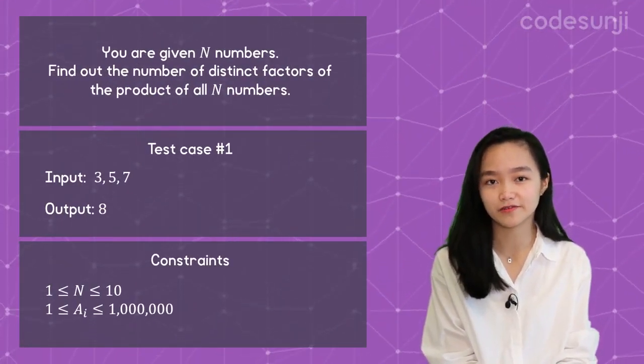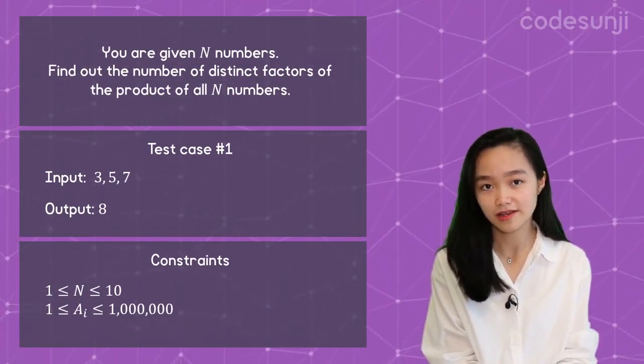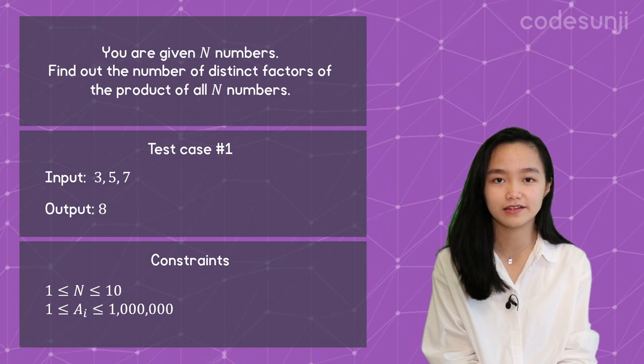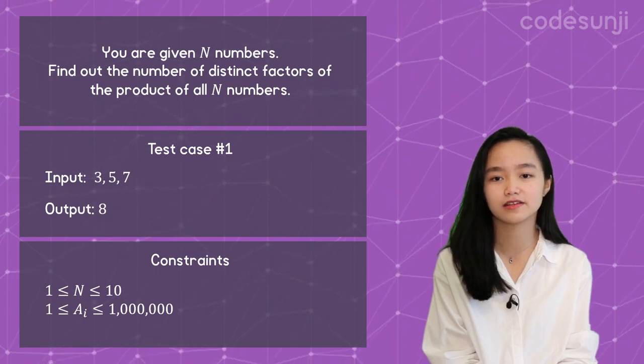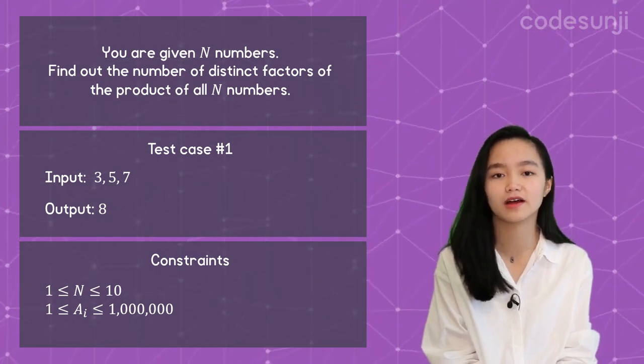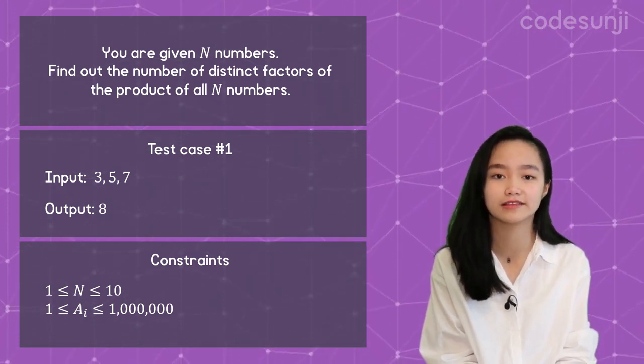You are given n numbers — for example 3, 5, and 7 — and you have to find out the number of distinct factors of the product of all n numbers.